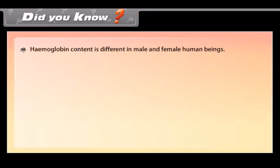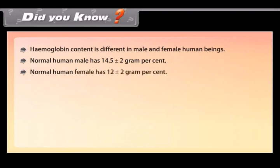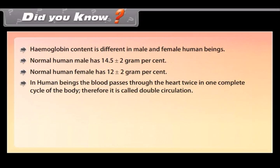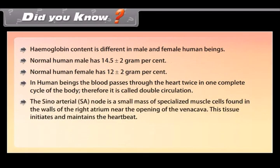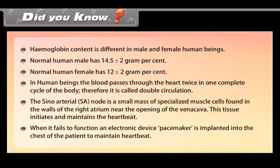Did you know? Hemoglobin content is different in male and female human beings. Normal human male has 14.5 plus minus 2 gram per cent. Normal human female has 12 plus minus 2 gram per cent. In human beings, the blood passes through the heart twice in one complete cycle of the body, therefore it is called double circulation. The sino-atrial SA node is a small mass of specialized muscle cells found in the walls of the right atrium near the opening of the vena cava. This tissue initiates and maintains the heartbeat. When it fails to function, an electronic device pacemaker is implanted into the chest of the patient to maintain heartbeat.